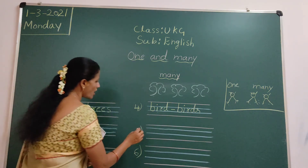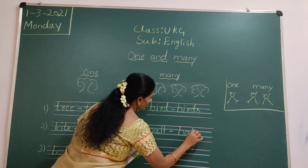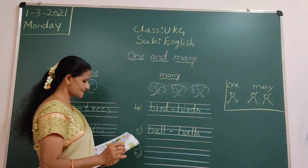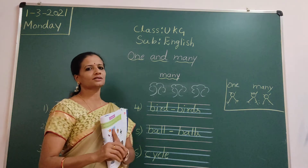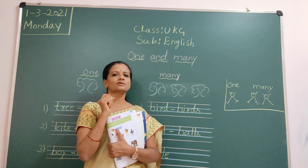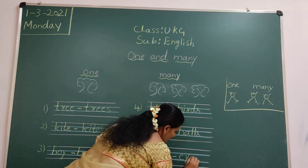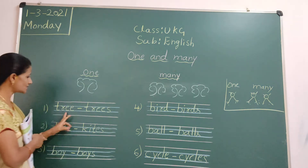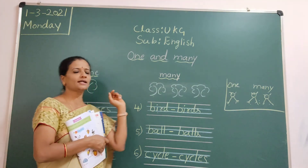Next: ball. B-A-L-L. Ball, balls. One ball, we call 'ball'. Two balls are there means 'balls' — that is many. We will add S. Next: cycle. C-I-C-L-E. Cycles. One cycle. Two cycles are there, what we call? Cycles. That is many. Cycle, one; cycles, many. For many we will add S. Tree, trees — one, many.